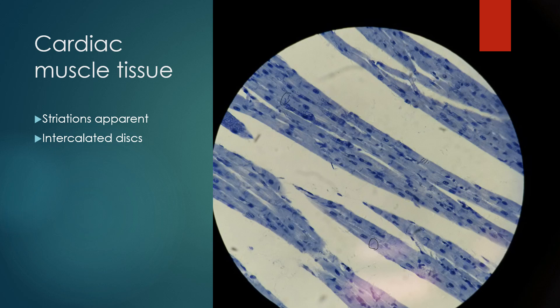These would be intercalated discs. They're going to look like more obvious striations, and it's not necessarily clear that they're spanning the whole width of those fibers. If you see striations and you see those blotchy lines, that's your indication that you're looking at cardiac muscle tissue. That's only going to be found in the muscle of the heart.